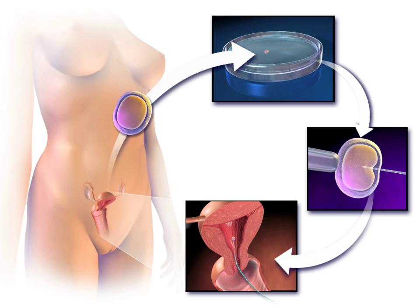In vitro fertilization is the technique of letting fertilization of the male and female gametes occur outside the female body. Techniques usually used in in vitro fertilization include transvaginal ovum retrieval — the process whereby a small needle is inserted through the back of the vagina and guided via ultrasound into the ovarian follicles to collect the fluid that contains the eggs — and embryo transfer, the step whereby one or several embryos are placed into the uterus of the female with the intent to establish a pregnancy.